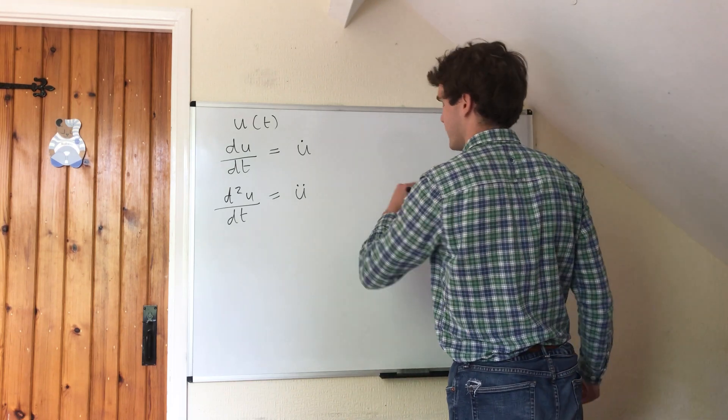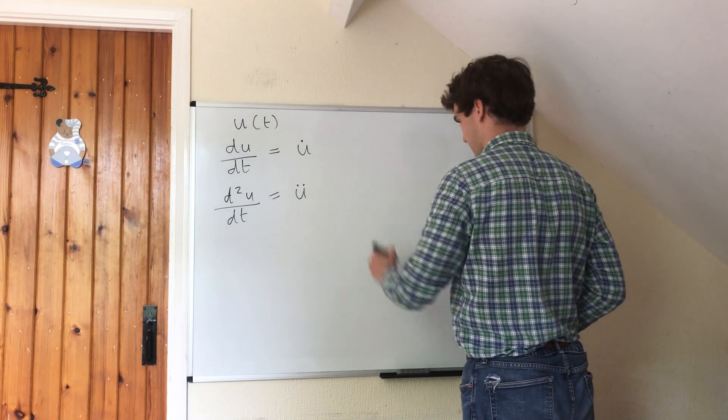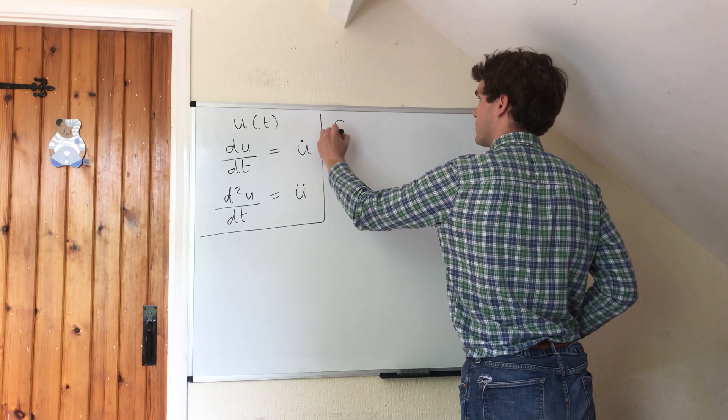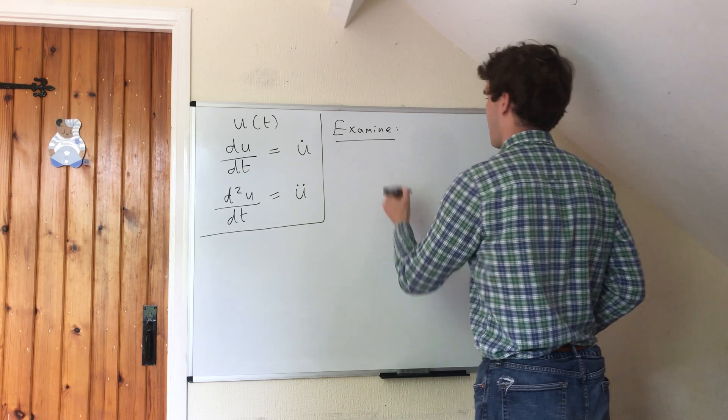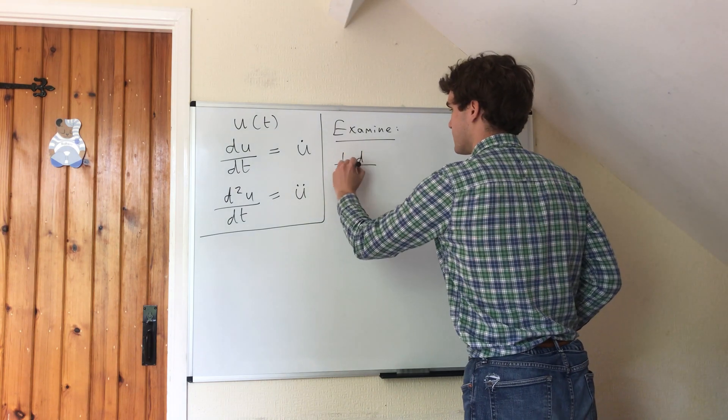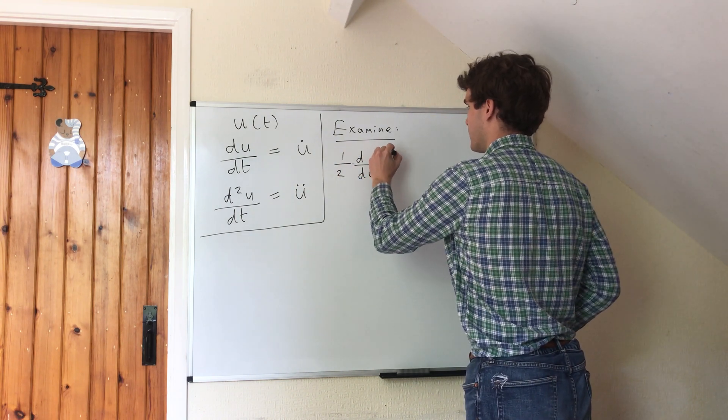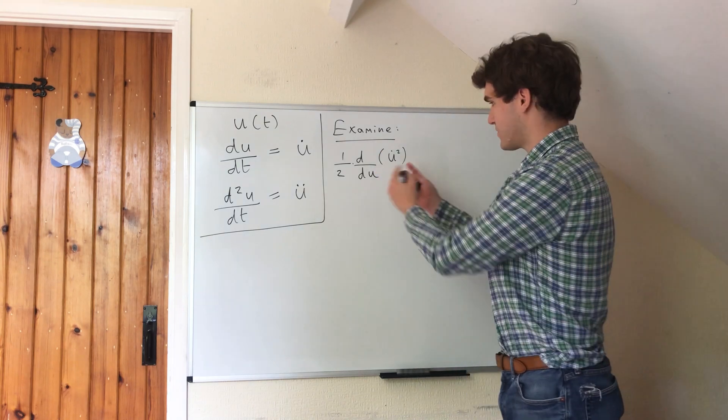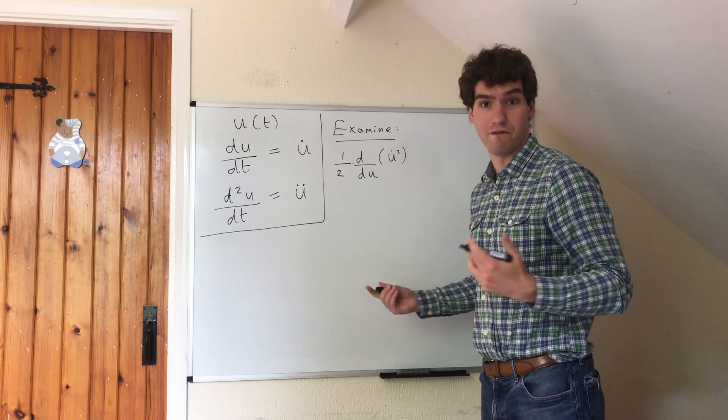The way we're going to do this is by examining a half d by du, this is a multiplication, of u dot squared. This thing might seem pretty random, but in actual fact it will prove to be very useful.